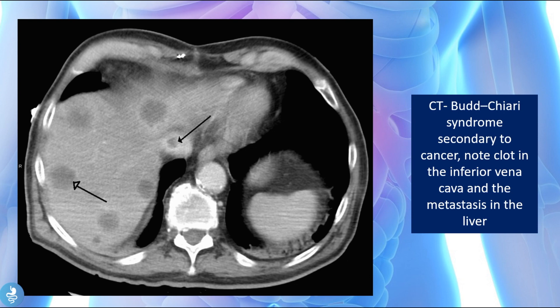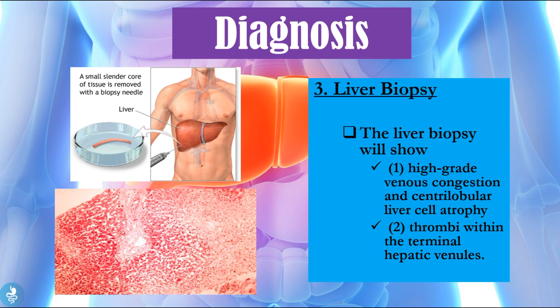This CT of Budd-Chiari syndrome is secondary to cancer — we see multiple spots of liver metastasis. These collections of cancer cells compress the hepatic venous outflow system and the arrow shows the inferior vena cava noted with a clot. Since the right, middle and left hepatic veins all drain into the inferior vena cava, a large clot there produces Budd-Chiari syndrome. A liver biopsy will usually show high-grade venous congestion, centrilobular hepatocyte atrophy and thrombi within the terminal hepatic venules.